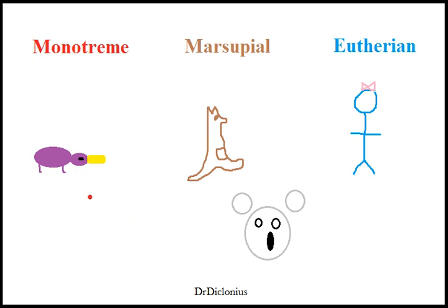The first type that we want to talk about here are the monotremes. The prime example is a platypus. This is supposed to be a platypus, but this platypus lays eggs. What a monotreme means essentially is an egg-laying mammal.